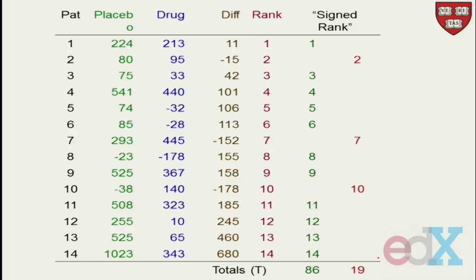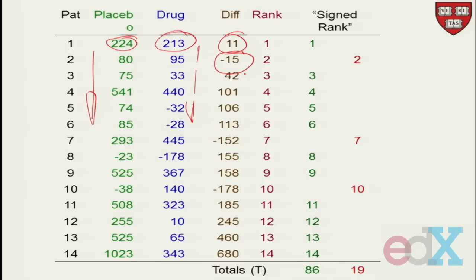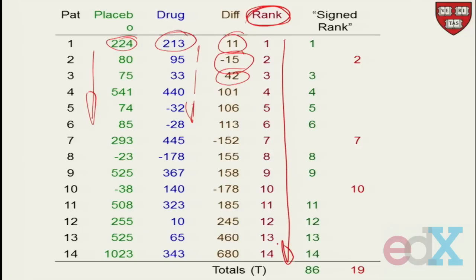Let's do the one-sample first. Here's another situation where we've got pairs — here are the placebo readings and here are the drug readings. The green is the placebo readings, and there are the drug readings. We look at the difference. We could do our sign test on these differences, but Wilcoxon said no — here's what we'll do: we'll rank the differences, ignoring the sign.